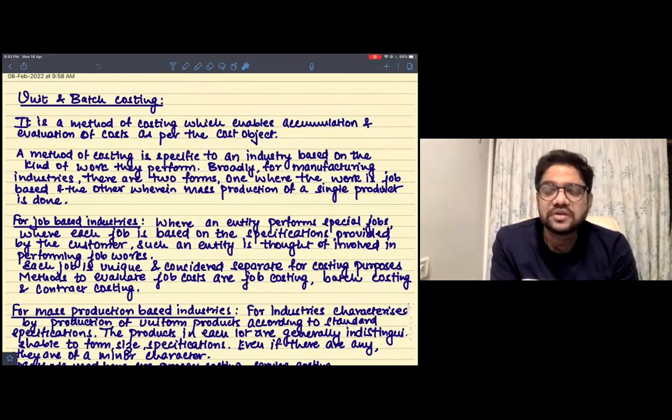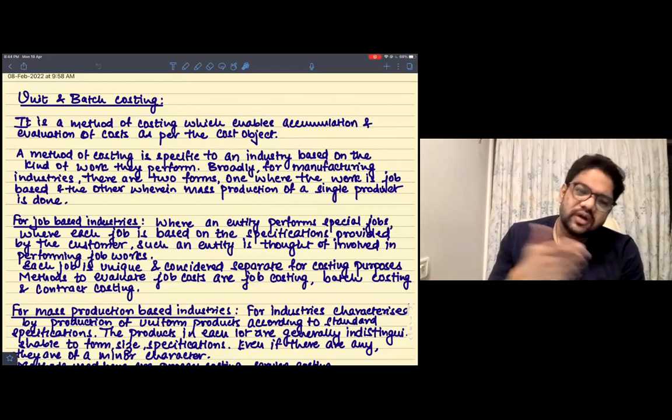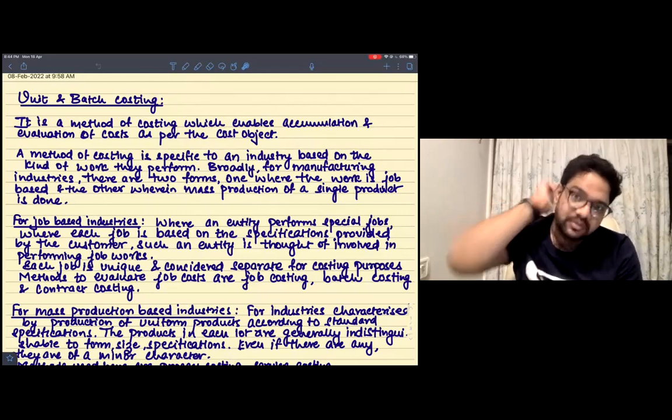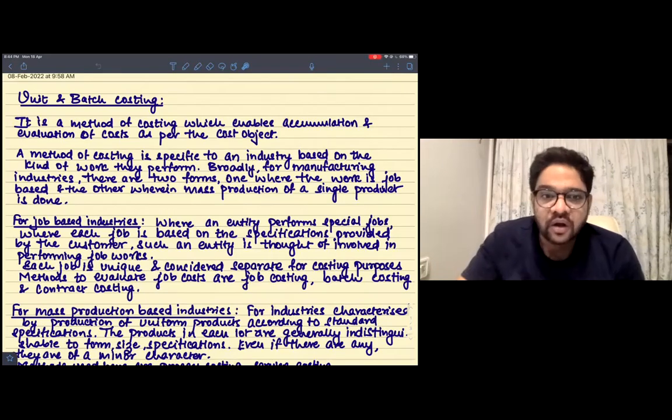There's absolutely nothing, but if at all there's a question that comes from this chapter, most probably it'll be about the differentiation between job and batch costing. That's about it, but since we're already on it and it's only four pages of notes, let me just completely give you the idea of it.